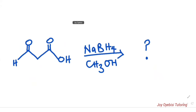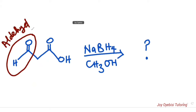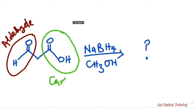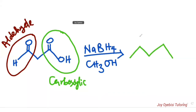This is the second question. Here, you are given a reaction and asked what the product is. First things first, you look at the functional groups present in the compound. In this compound we have an aldehyde and a carboxylic acid. Sodium borohydride would not be able to reduce the carboxylic acid, so your focus would then be on the aldehyde. Since we are asked for the product, all you need to do is concentrate on the aldehyde and turn that to an alcohol. Leave the carboxylic acid the way it is.